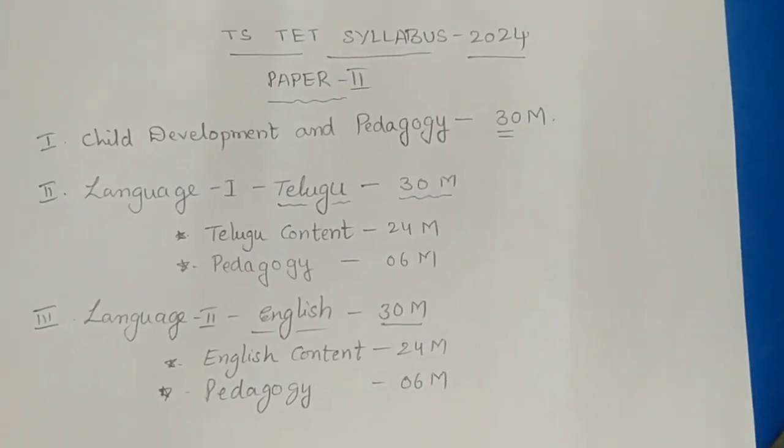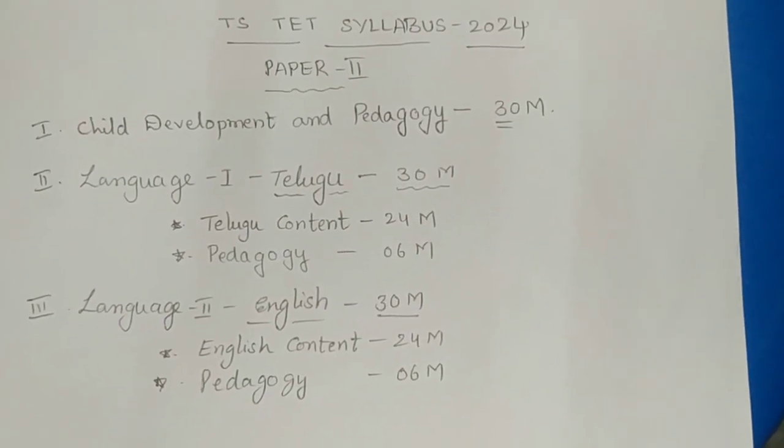In this we have 5 topics. First one is Child Development and Pedagogy for 30 marks.